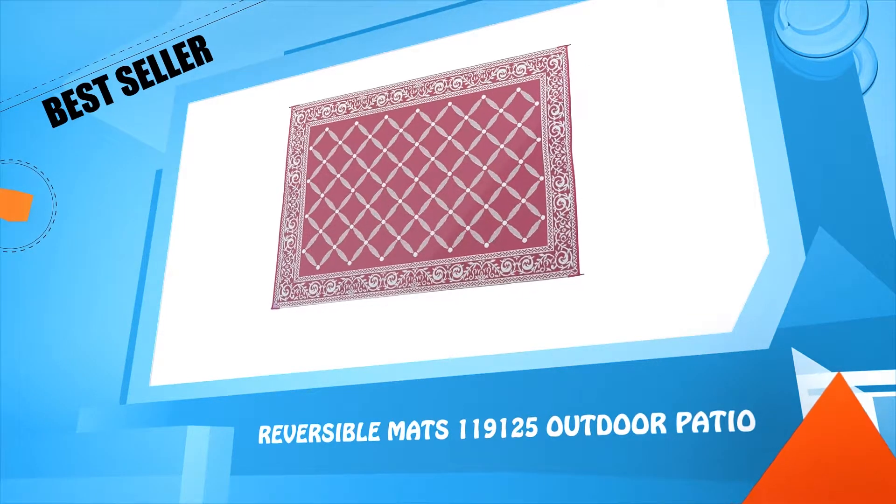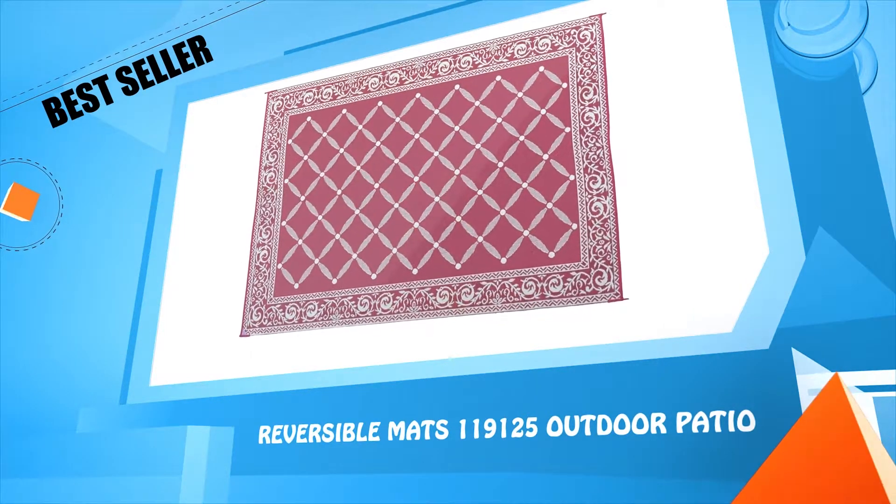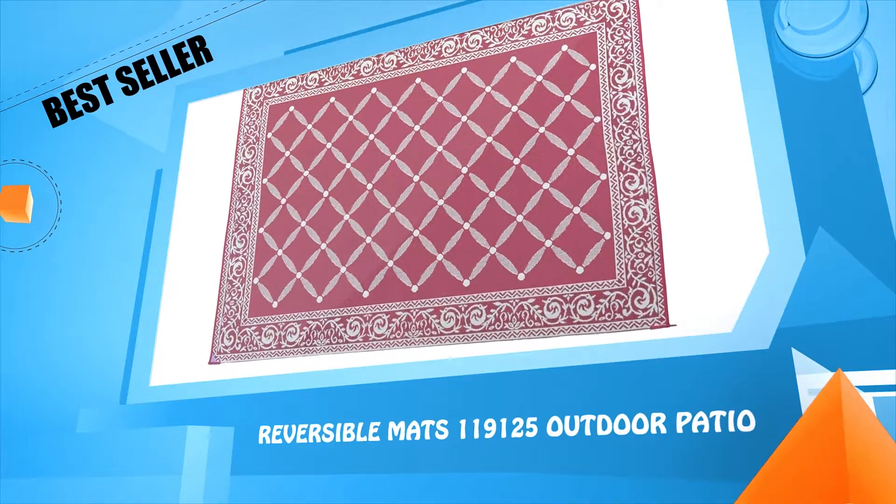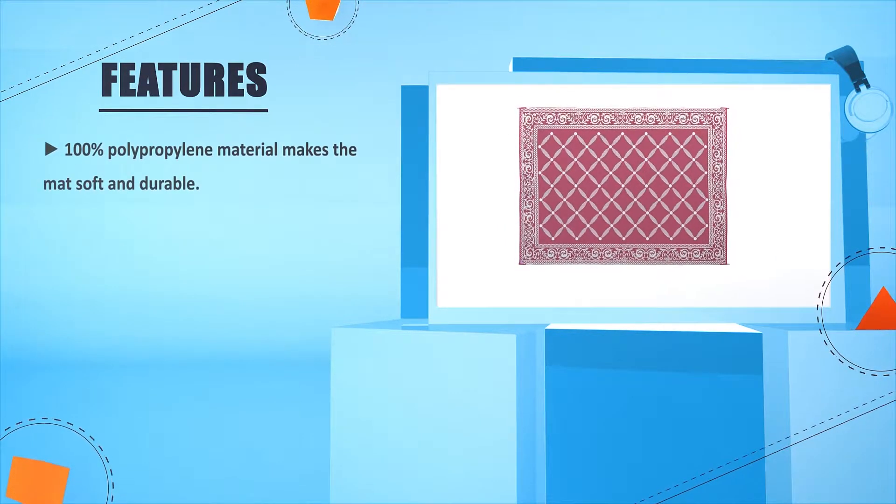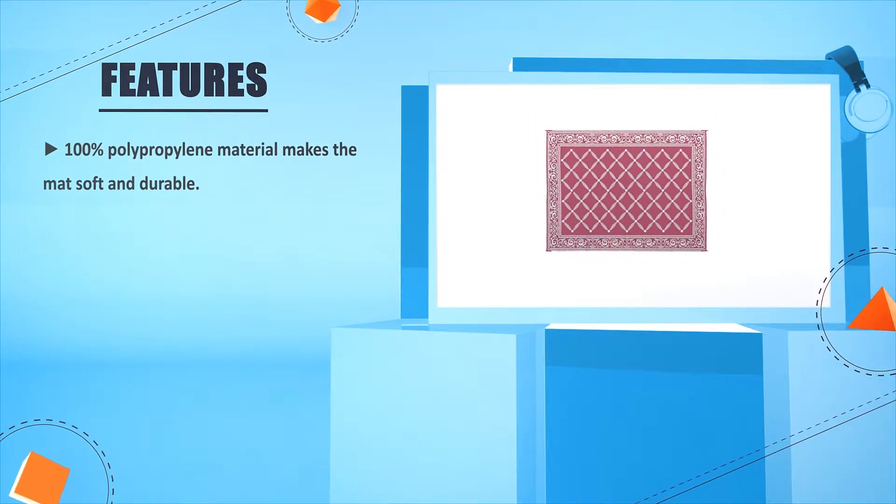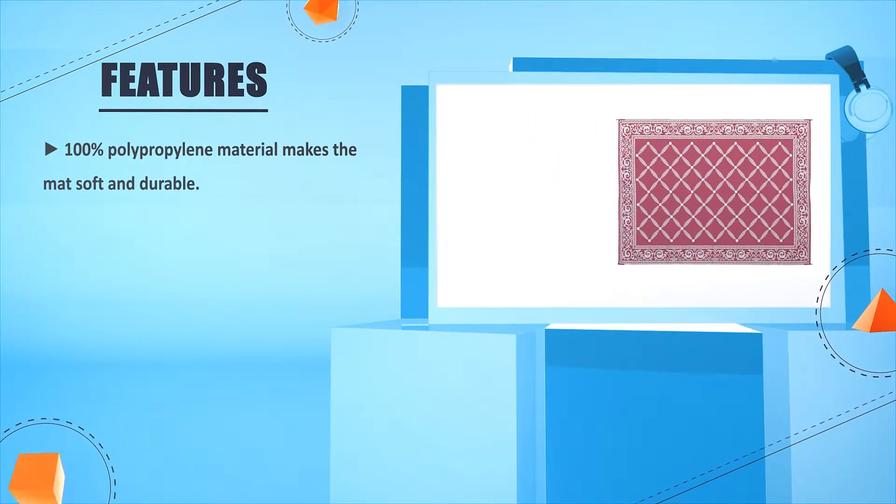Number one: Reversible Mats 119125 Outdoor Patio. 100% polypropylene material makes the mat soft and durable.